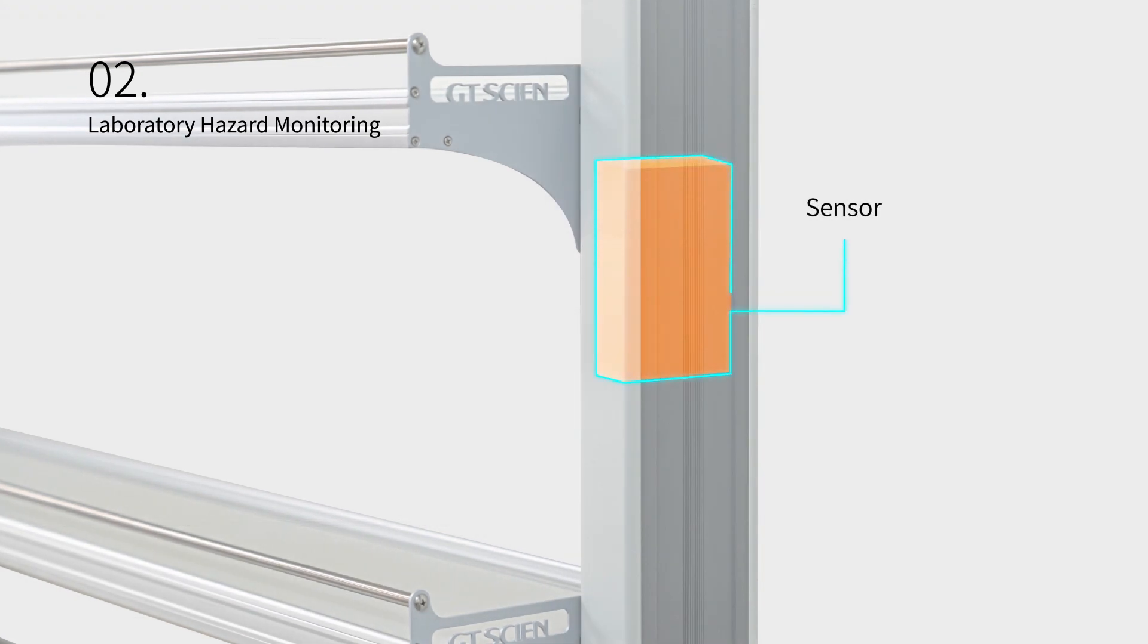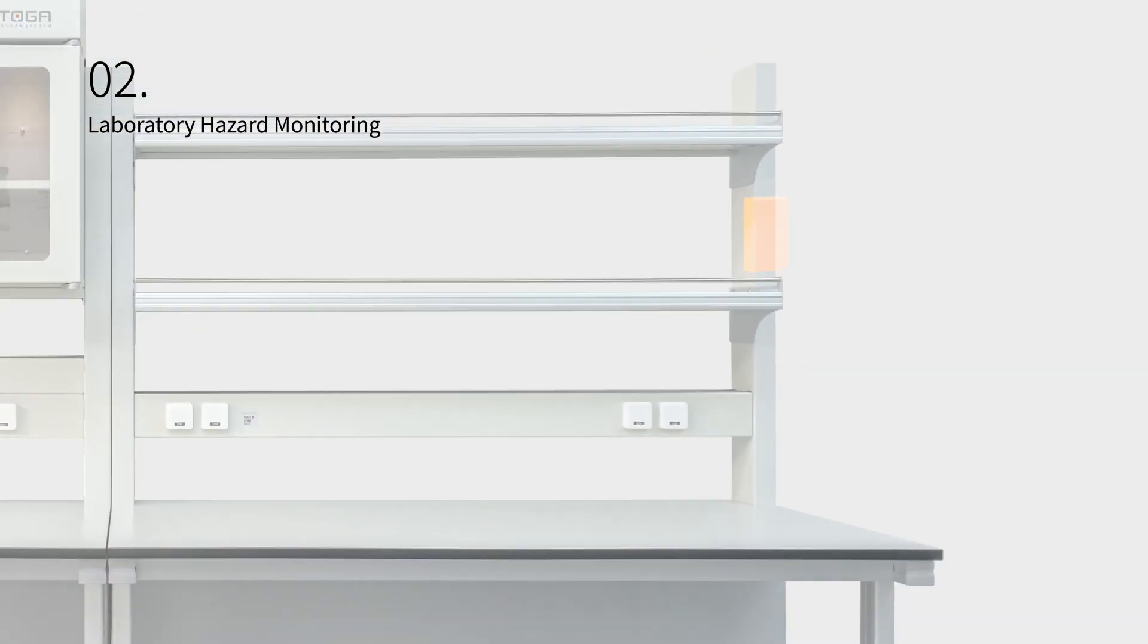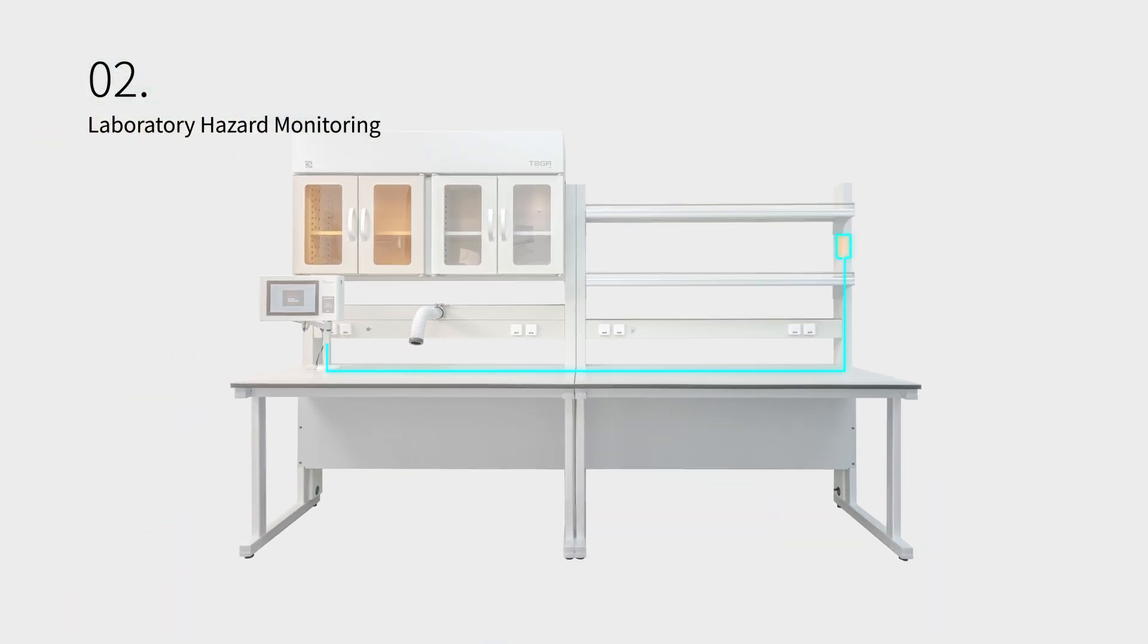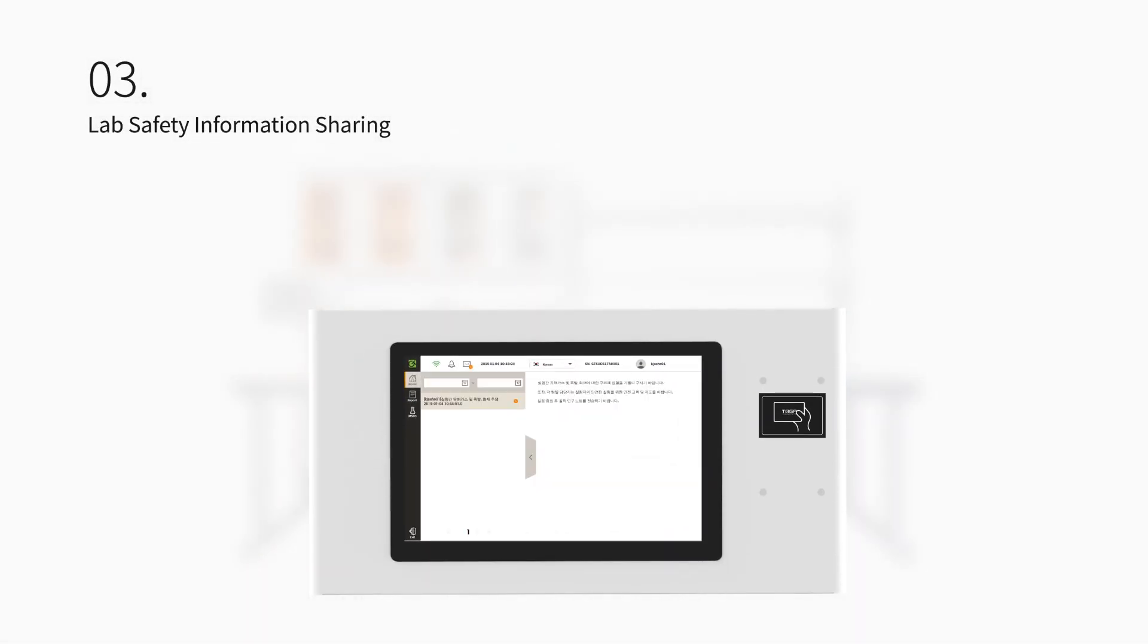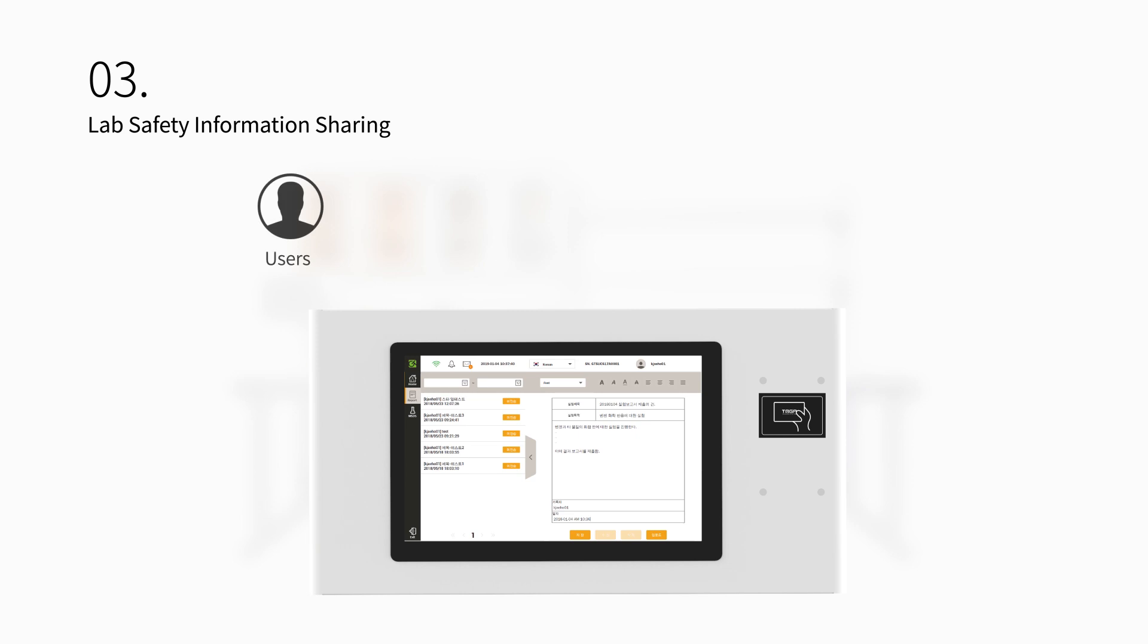Built-in sensors detect risk factors such as gas and carbon dioxide concentration in the air. When gases in the environment exceed safe levels, push alarms are sent through mobile and web applications to alert researchers in real-time and prevent them from chemical exposure.